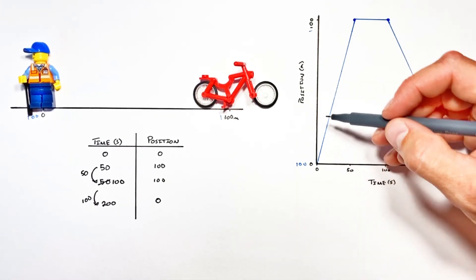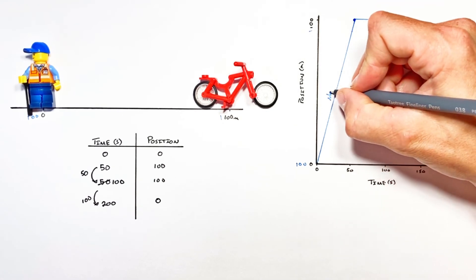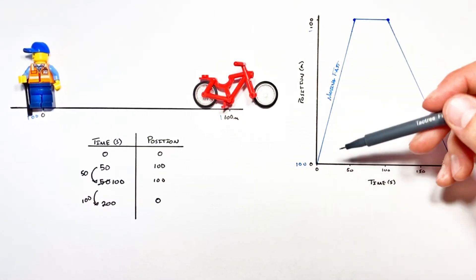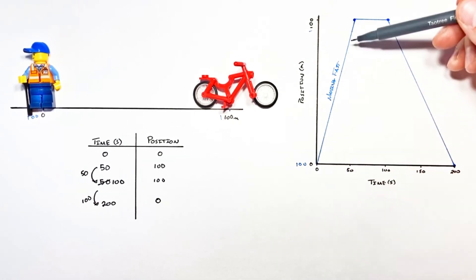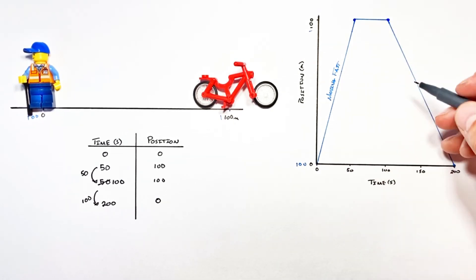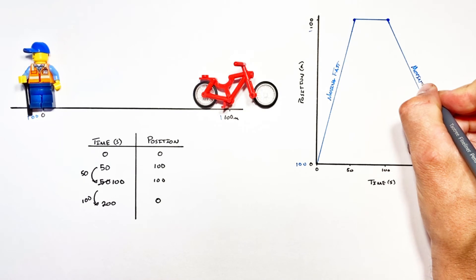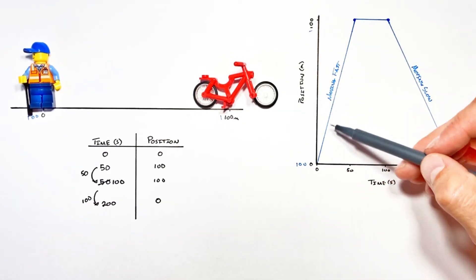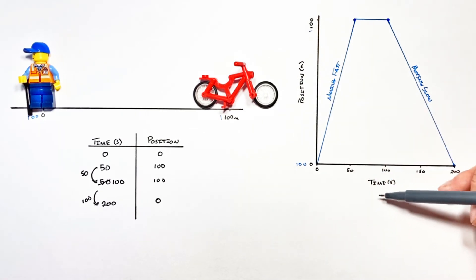And ultimately that's because when he was moving fast his position was changing faster so we see a steeper line on the graph. When he was moving slow we saw a more gradual change. And so from that you can conclude that the steeper the line is on a position versus time graph the faster an object is moving.